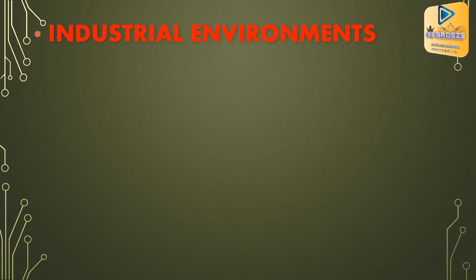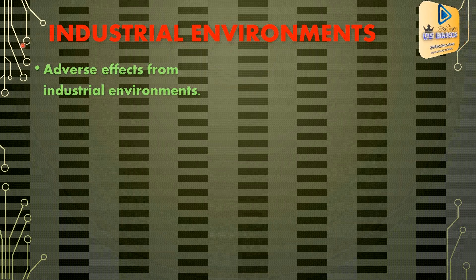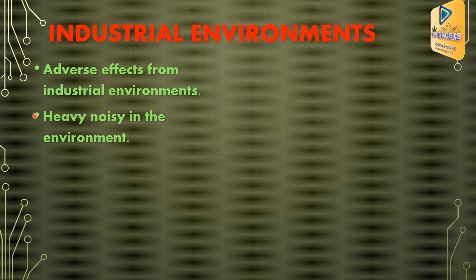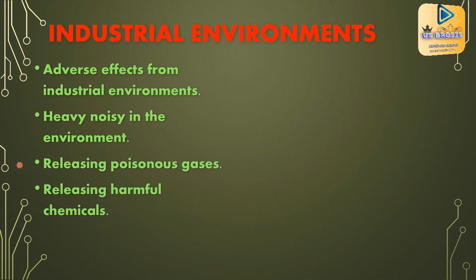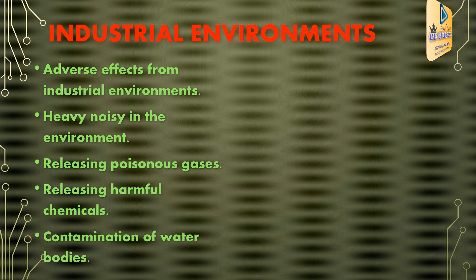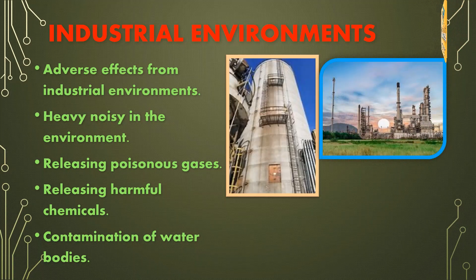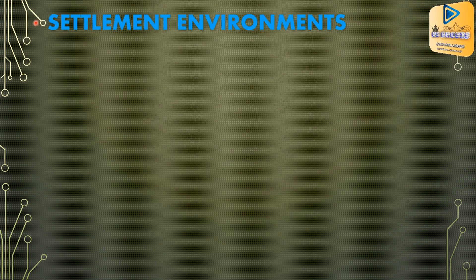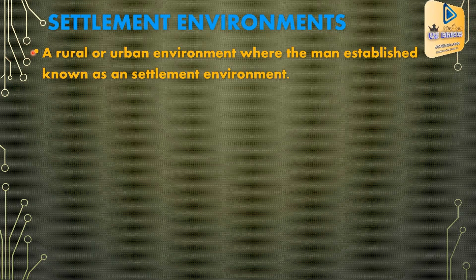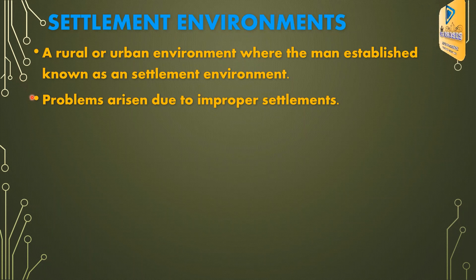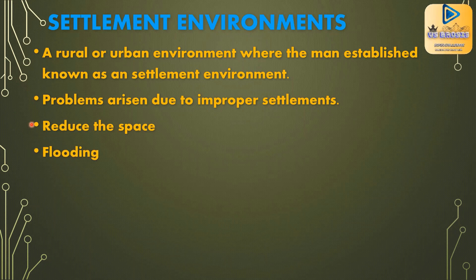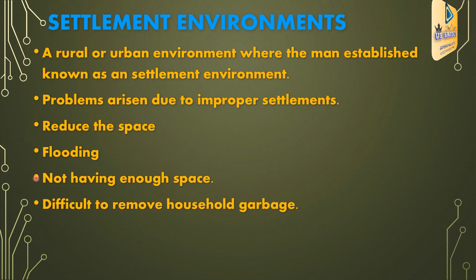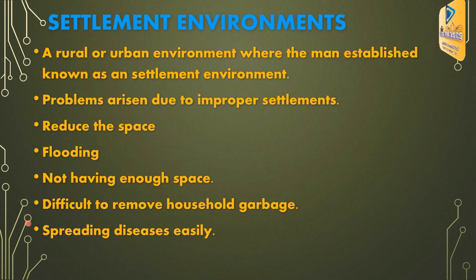Then about industrial environments. Adverse effects from industrial environments include: heavy noise in the environment, releasing poisonous gases, releasing harmful chemicals, and contamination of water bodies. Regarding settlement environments: a rural or urban environment where humans are established is known as a settlement environment. Problems arising due to improper settlements include: reduced space, flooding, difficulty removing household garbage, spreading of diseases, and poor ventilation.